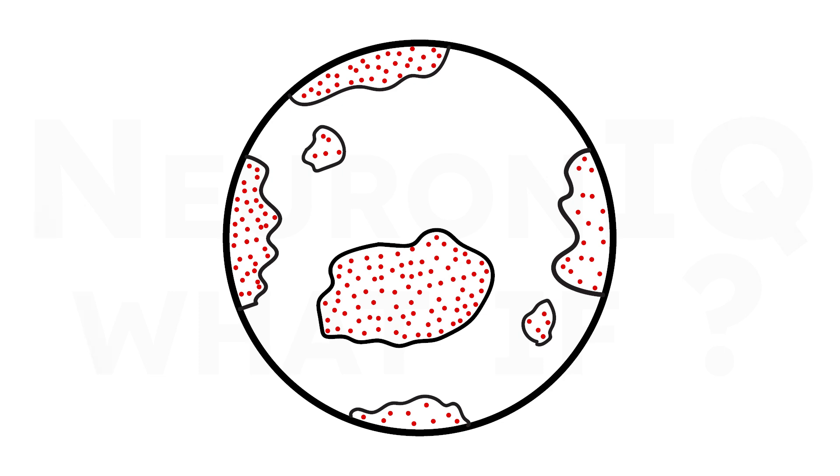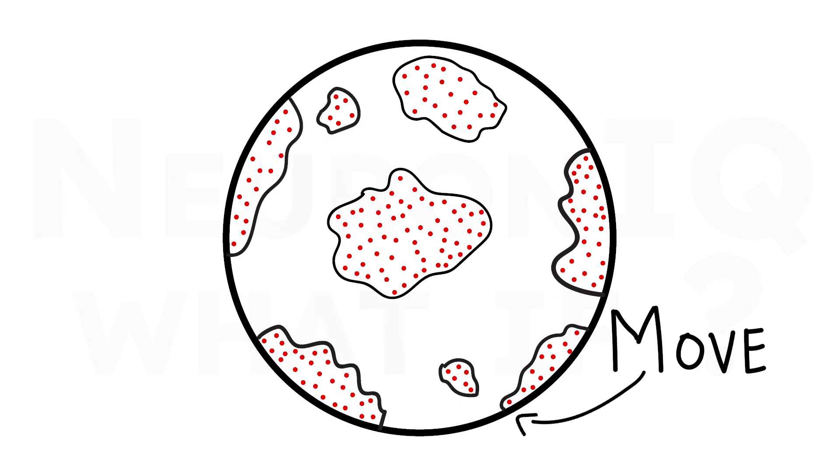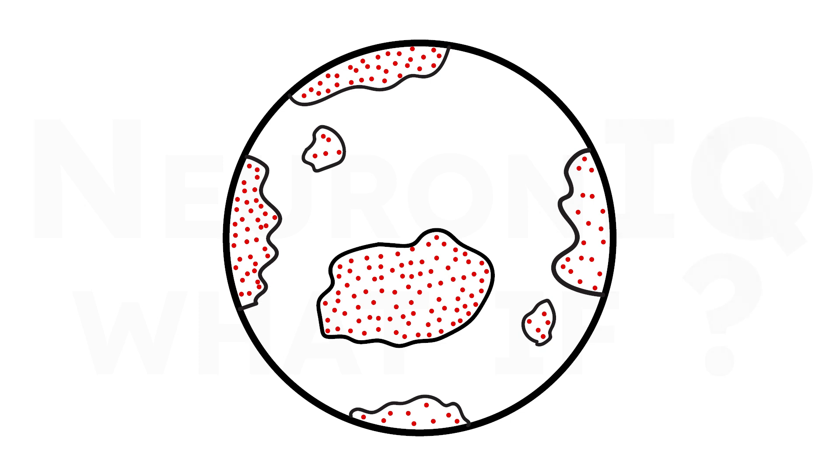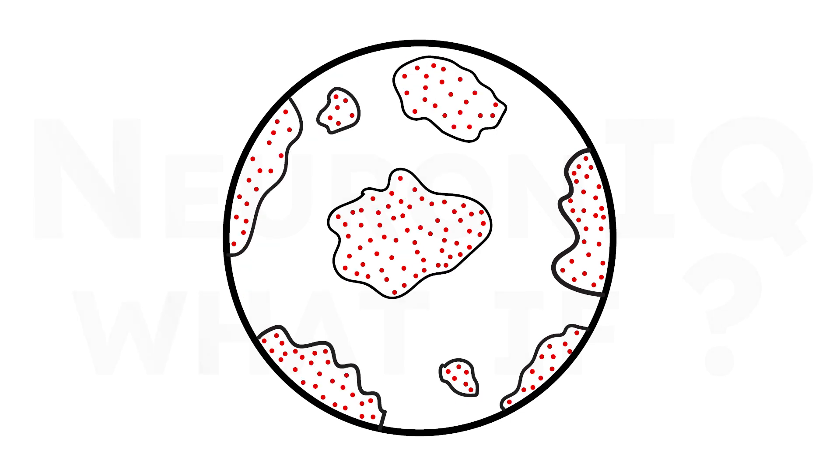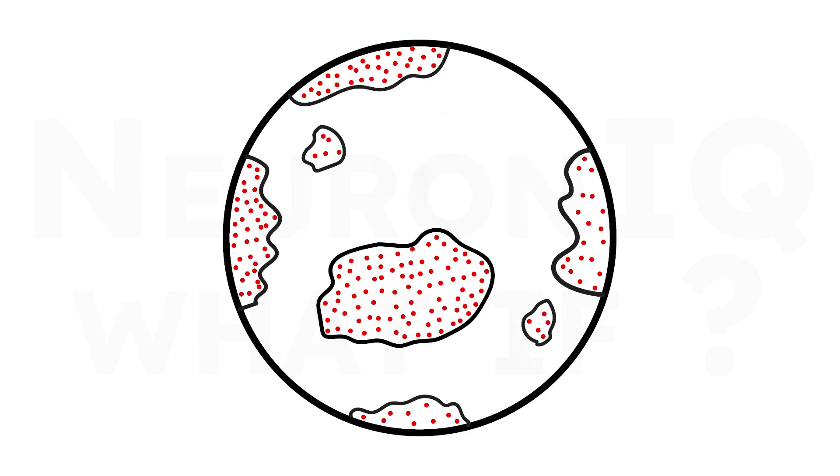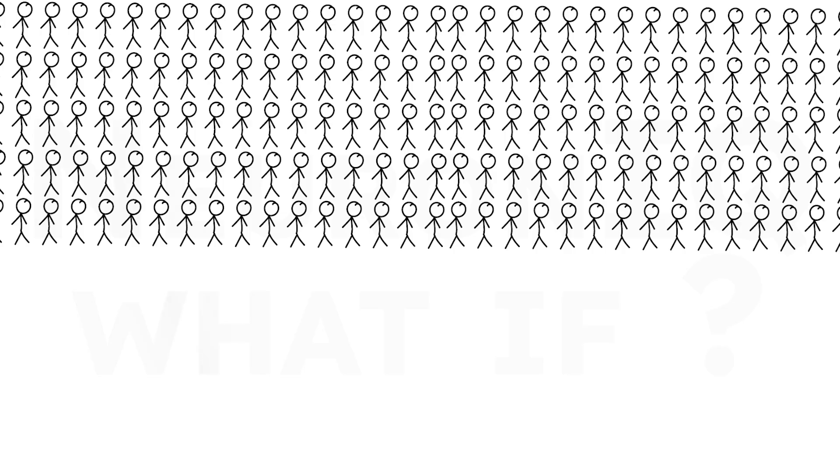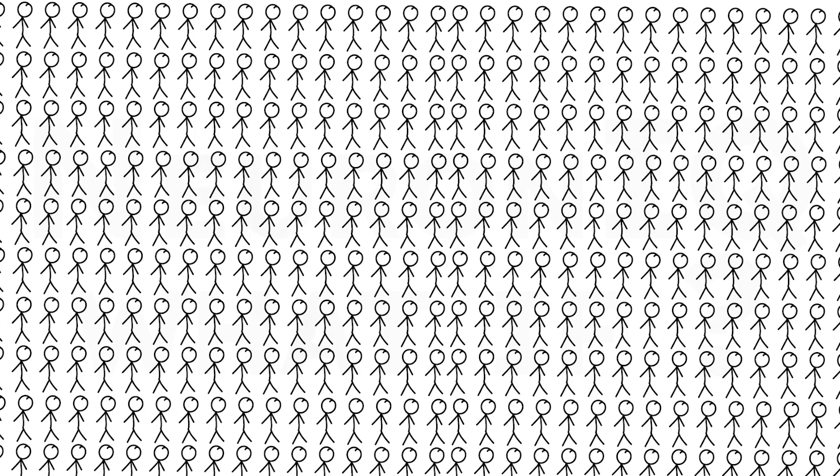The most mind-blowing part? The Earth itself would actually move, albeit imperceptibly. Because of the force we applied downward during the jump, the Earth would briefly shift in the opposite direction, similar to the recoil of a gun. Don't worry though, the movement would be so minuscule that it wouldn't affect Earth's orbit. Still, the idea of 8 billion people momentarily shoving the planet is enough to give you chills.